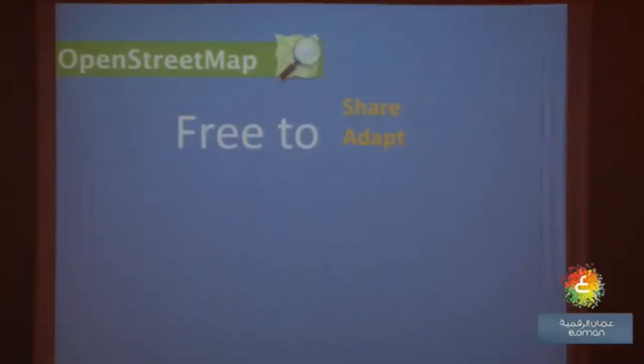And it is free to adapt, meaning that you can make adjustments to the map. For example, you want to translate the map from French into Arabic — you can do that. That's what I did when I went to Japan and Thailand, because sometimes people use their own alphabet which I cannot read. So you can make an adaptation of the map, translate the text, and use it for yourself. That's the second freedom we get from OpenStreetMap.